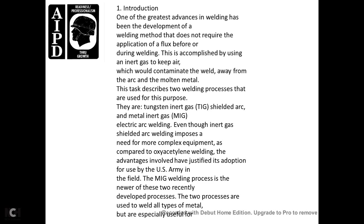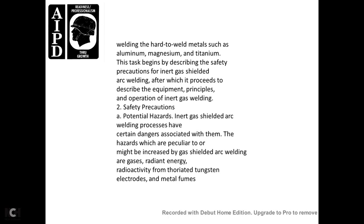The MIG welding process is the newer of the two recently developed processes. Both processes are used to weld all types of metal, but are especially useful for welding hard-to-weld metals such as aluminum, magnesium, and titanium. This task begins with describing safety precautions in inert gas arc welding, which precedes describing equipment principles and operation.